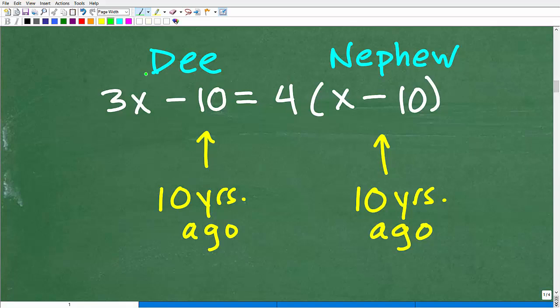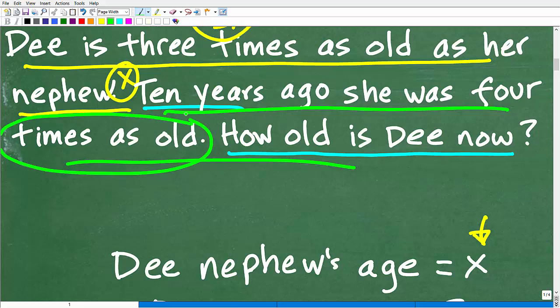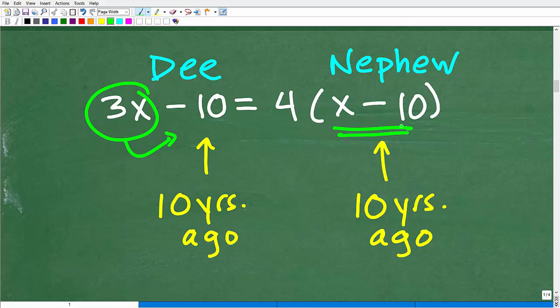Remember, D's current age is 3X. So ten years ago, she was 3X minus 10, right? So 3X minus 10 is how old D was ten years ago. How old was the nephew ten years ago? Well, the nephew's age currently is X. So ten years ago, he was X minus 10. But remember, the problem says ten years ago she was four times as old. So D was four times as old. So whatever the nephew's age was ten years ago, if we multiply that by four, that's going to be her age ten years ago.